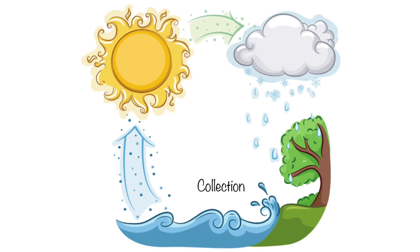Collection. When the precipitation falls on the ground, it either soaks into the soil to become groundwater, or it runs off into rivers and streams, which lead back to oceans. Then the process starts all over again.